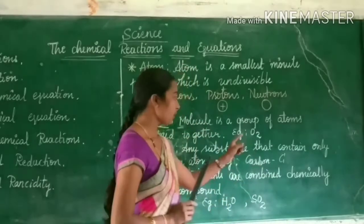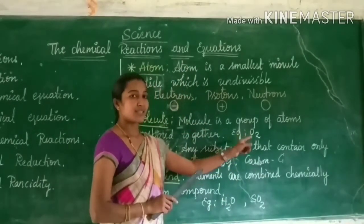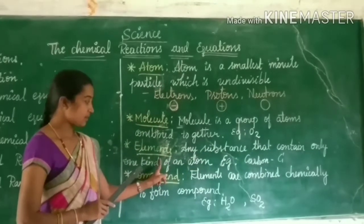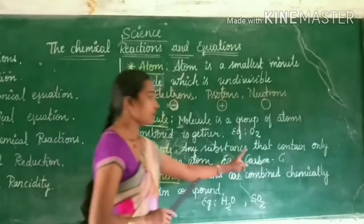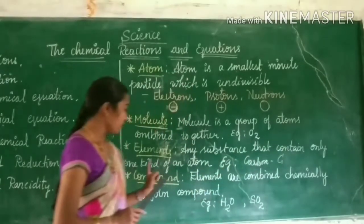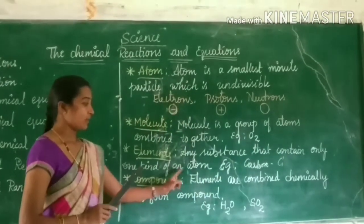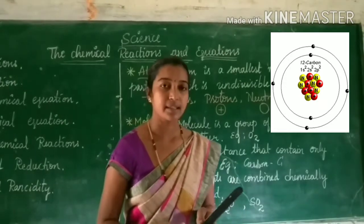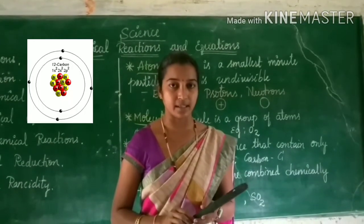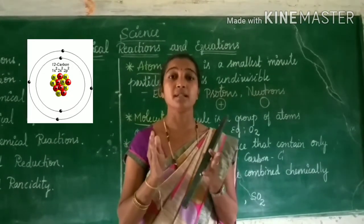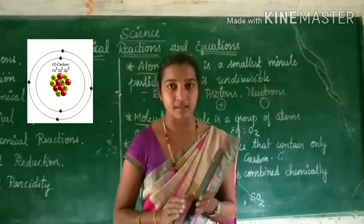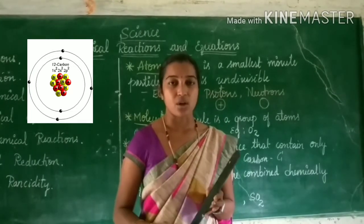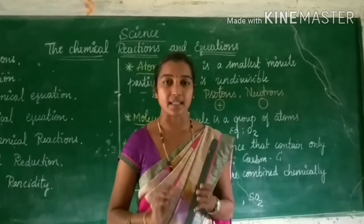Next, elements. An element is a substance that contains only one kind of atom. For example, carbon is an element. Carbon consists of only carbon atoms.